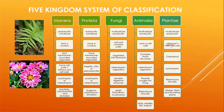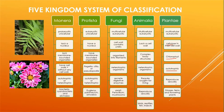The last kingdom is Plantia. Plantia contains multicellular eukaryotes whose cell wall contains a special substance known as cellulose. They also contain chlorophyll, which is essential for photosynthesis. Organisms in kingdom Plantia are autotrophic — they can prepare their own food using sunlight, water, and carbon dioxide through photosynthesis. They also reproduce sexually. Examples include mosses, ferns, and all flowering plants on Earth.